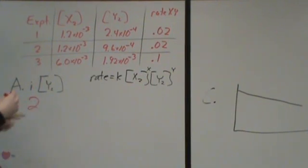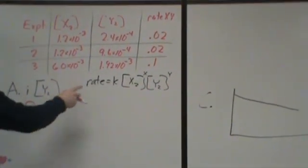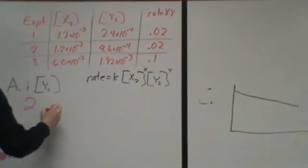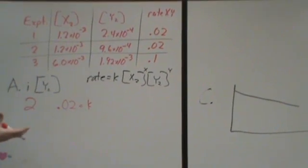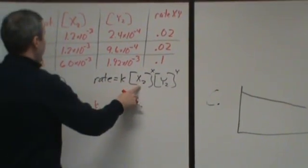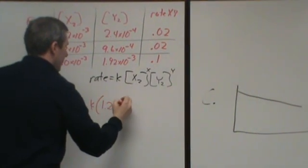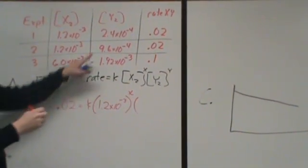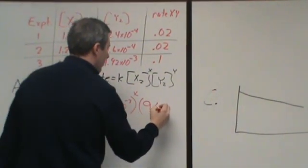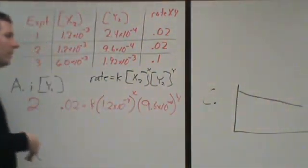So for experiment two, I'm going to plug in this function, everything that I know. So my rate for experiment two, I know is 0.02. My constant k, I don't know. My x2 concentration is this 1.2 times 10 to the negative third. That's raised to the power of x. And then the y is this 9.6 times 10 to the minus one.